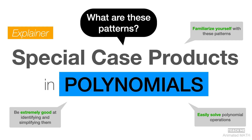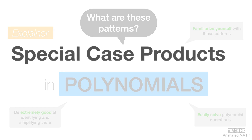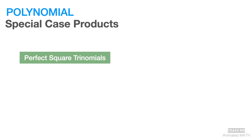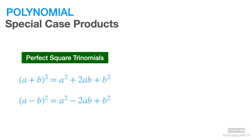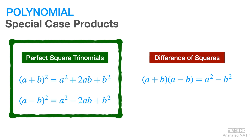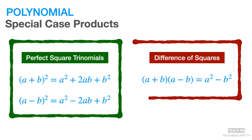What are these polynomial patterns? These basic patterns for special case products are known as the perfect square trinomials and difference of squares. If your goal is just short-term benefits, then it is okay to just memorize these patterns. But if you're after excellence and long-term benefits, then you should understand how to recreate these patterns yourself.